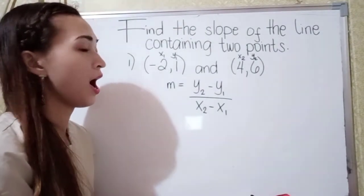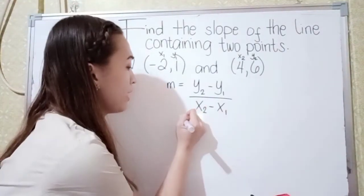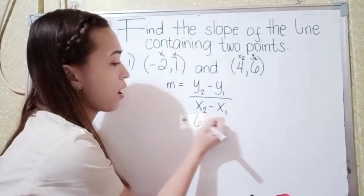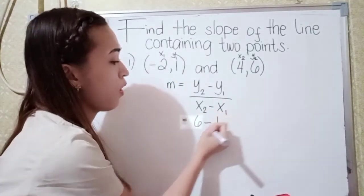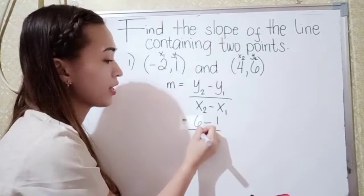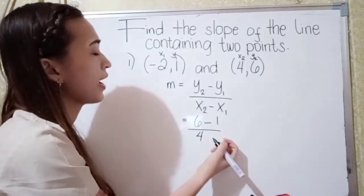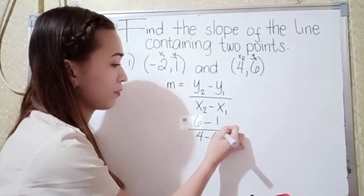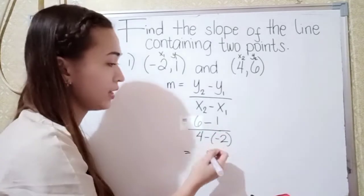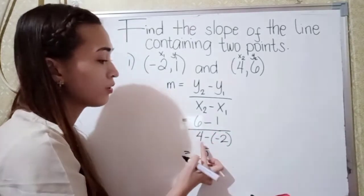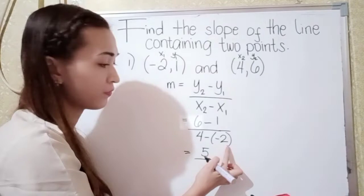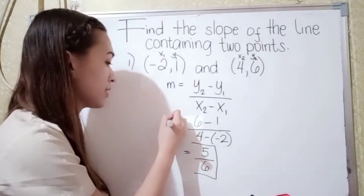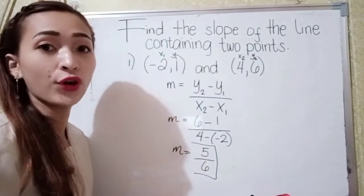Let's substitute the given values into the formula. Our y sub 2 is 6, minus y sub 1 which is 1, over x sub 2 which is 4, minus x sub 1 which is negative 2. So 6 minus 1 is 5, over 4 minus negative 2, which becomes 6. So our slope, or m, is 5 over 6.